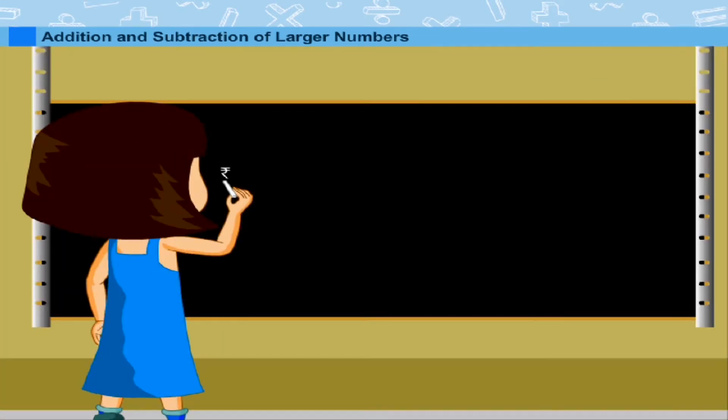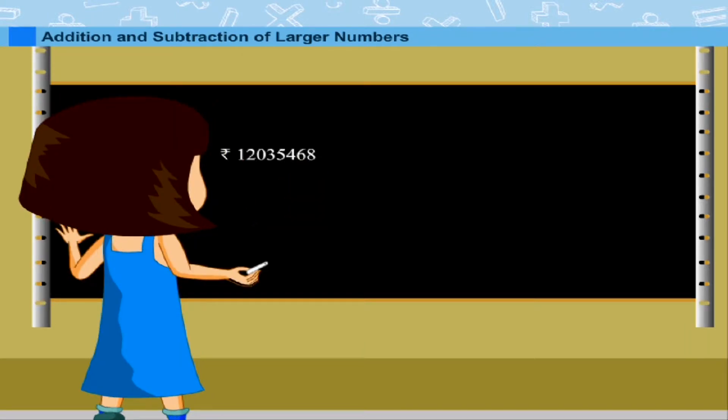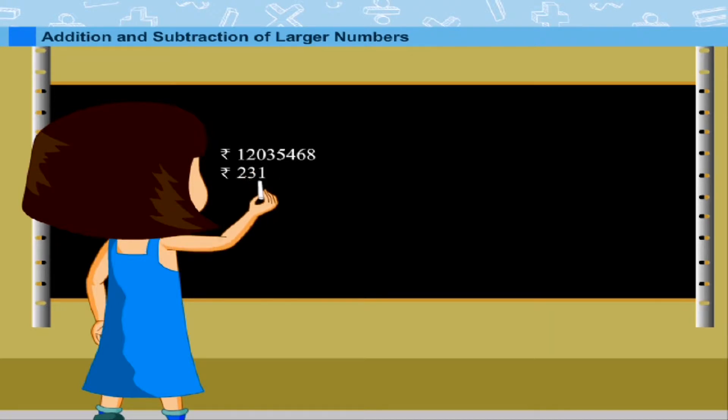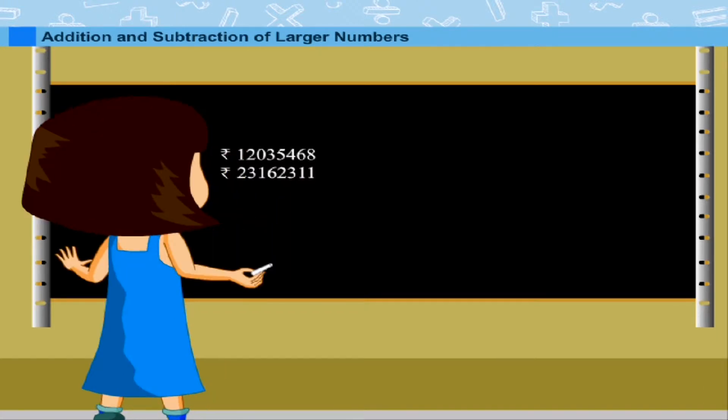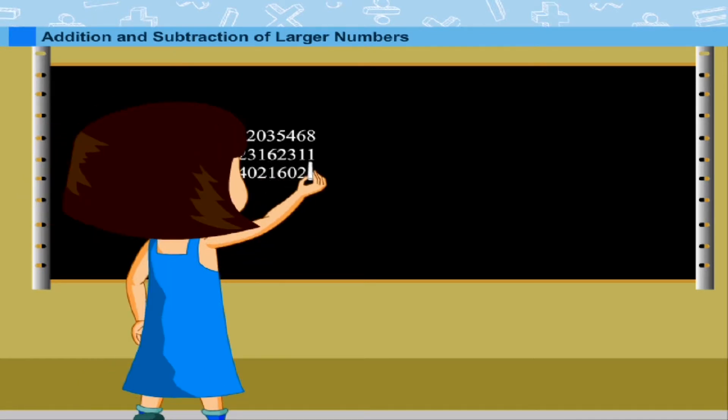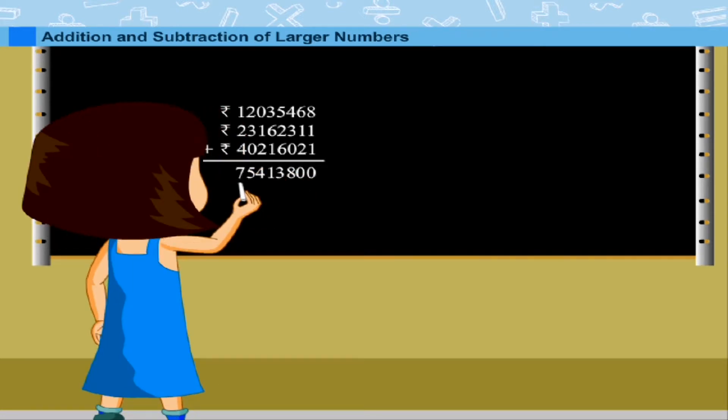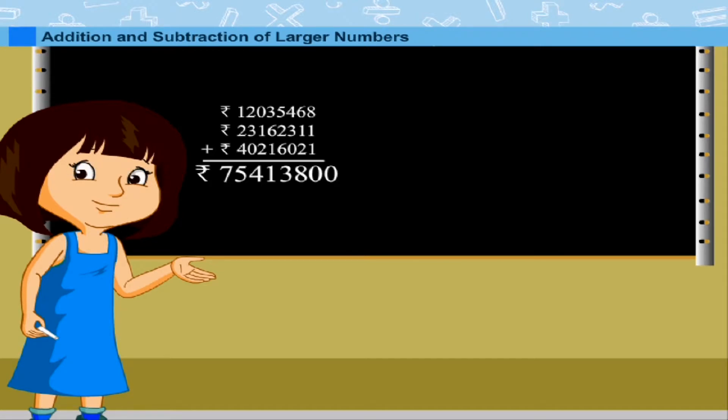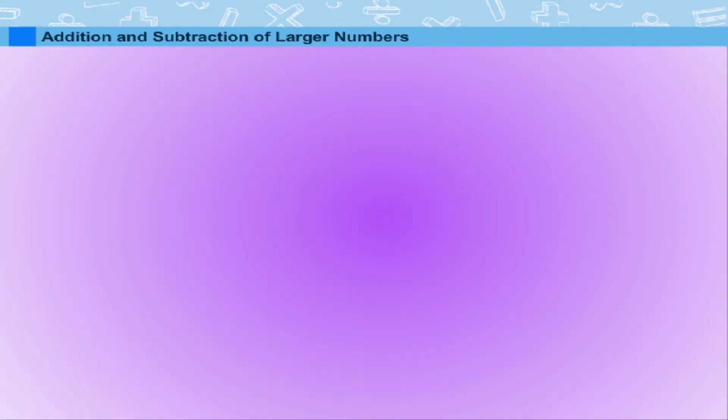Now add together to find the total money: 1 crore 20 lakhs 35,468 rupees plus 2 crores 31 lakhs 62,311 rupees plus 4 crores 2 lakhs 16,021 rupees equals 7 crores 54 lakhs 13,800 rupees. Well done.